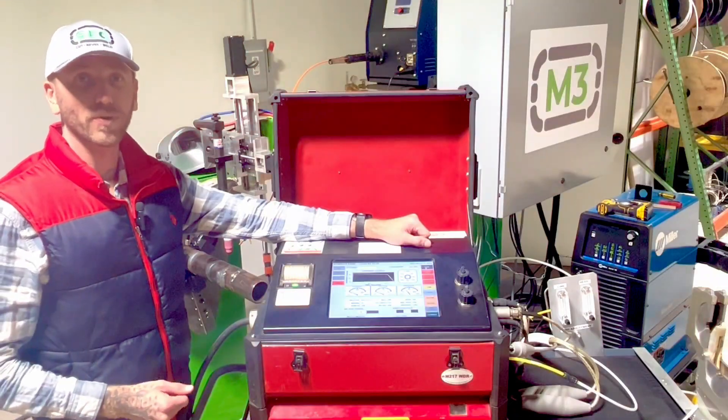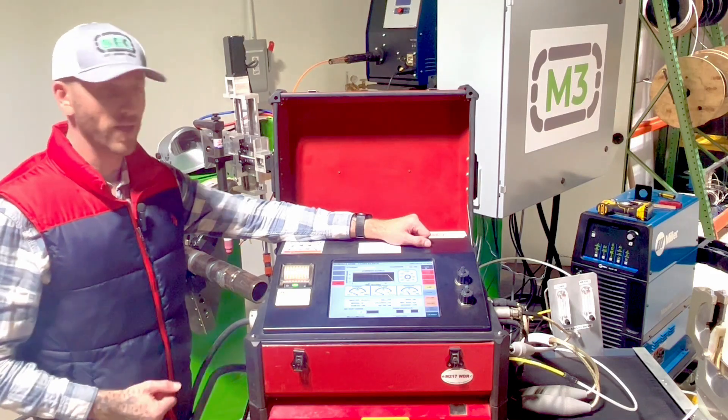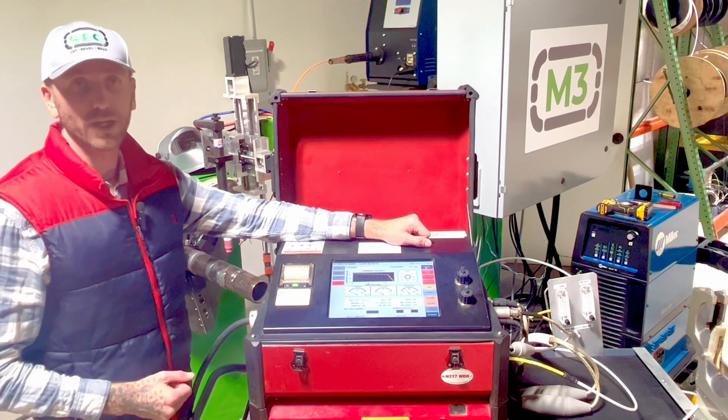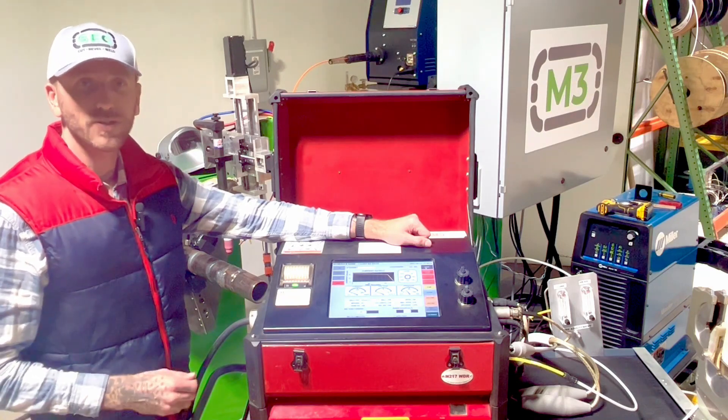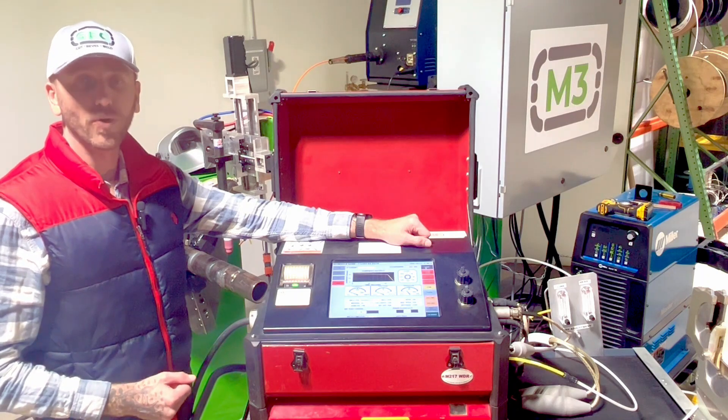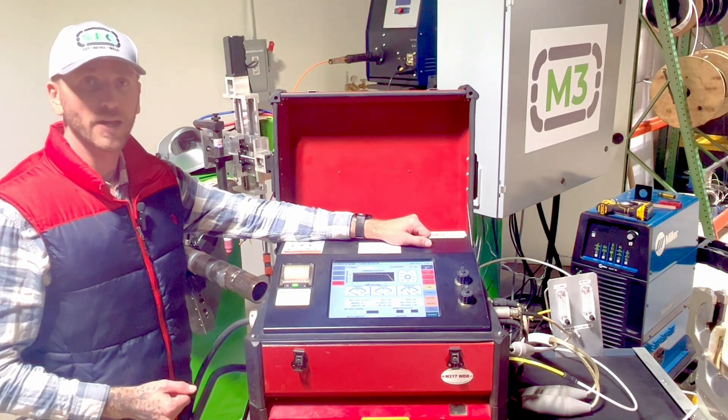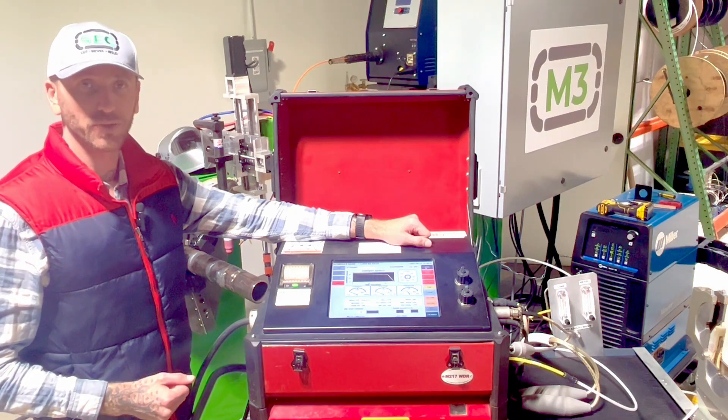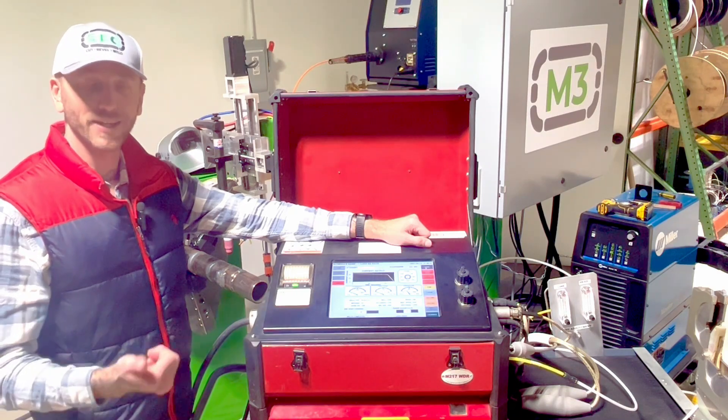All right. So that was a quick walkthrough on the 217 with the 84000 weld head, both by AMI. I hope that you enjoyed it. I hope this is educational. If you have any questions on any sort of orbital setup, please give us a call at 404-301-9411 or visit our website at secindustrial.com. Take care.